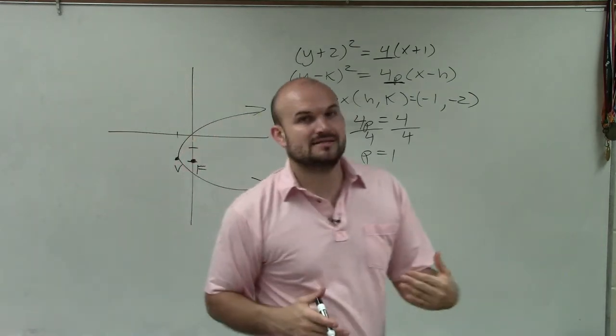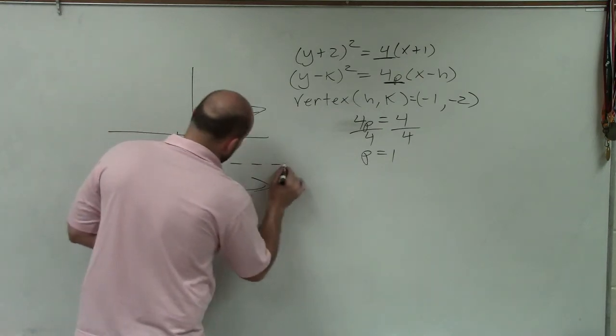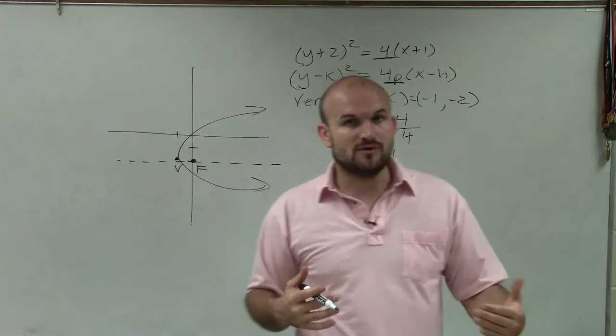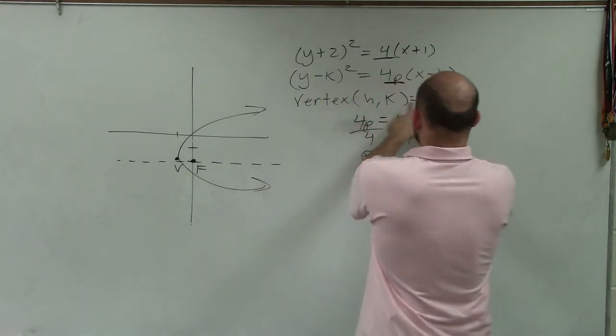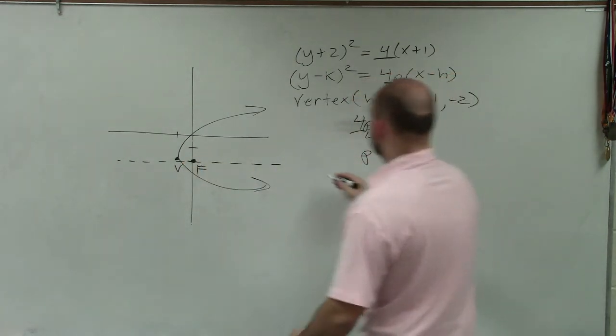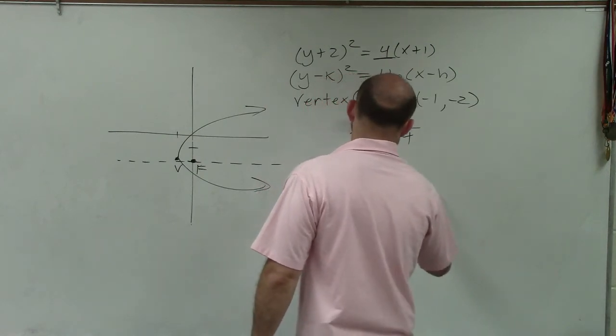What's also important is we know that the axis of symmetry goes through the vertex and the focus. The vertex is negative 1, negative 2. All I did was move to the right to find the focus. So my focus is going to be 0, negative 2.